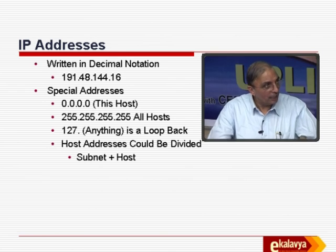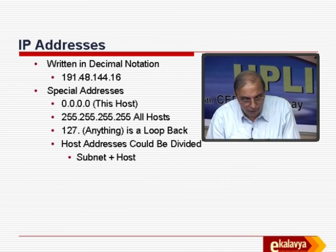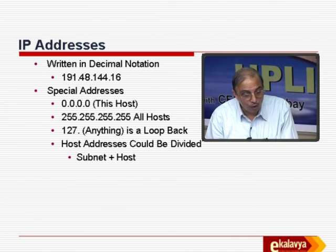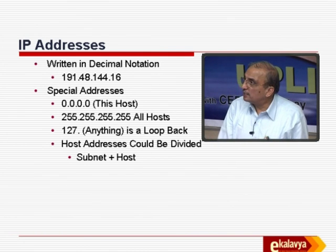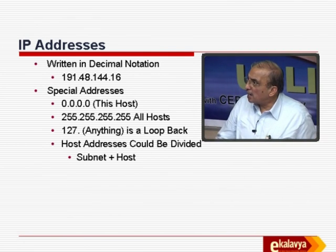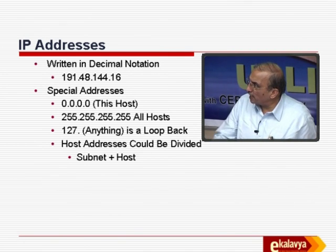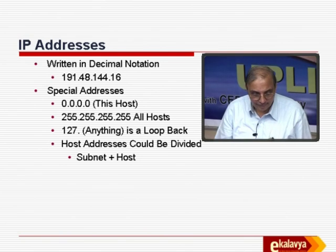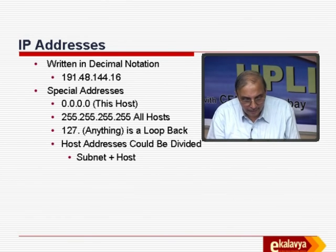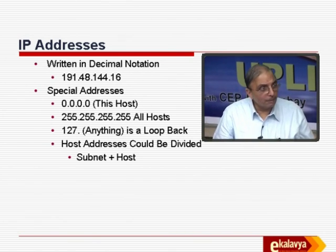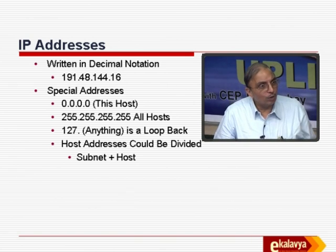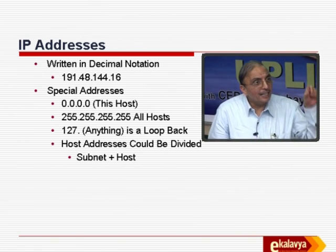There are some special addresses. For example, 0.0.0.0 means 'this host' — that is, me, myself. 255 means all hosts. 127.anything is a loopback — that means I am the transmitter and I am also the receiver. The host address can be divided into a subnet address and a host part: the subnet describes the network address and the host part describes the host.